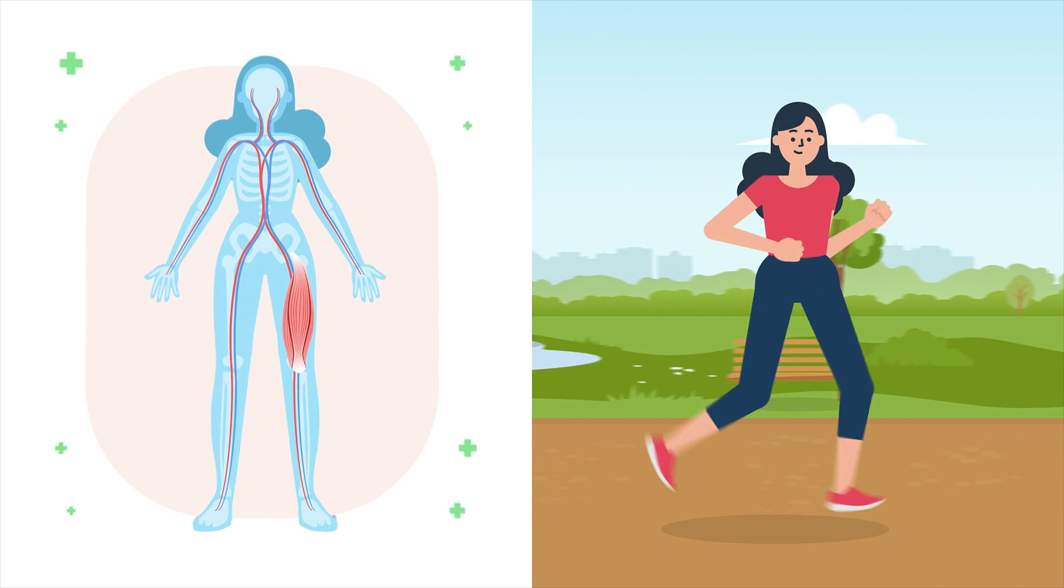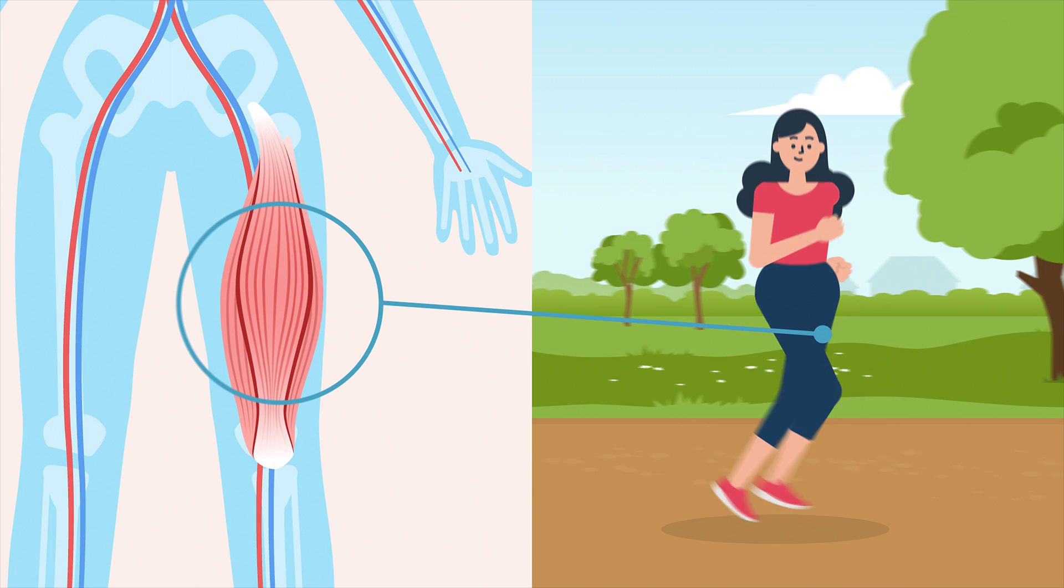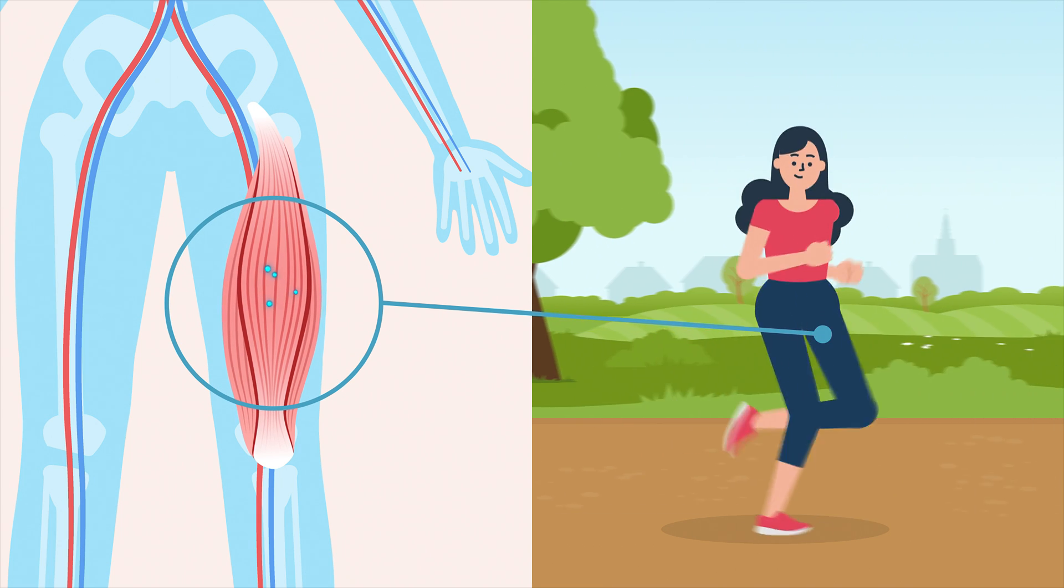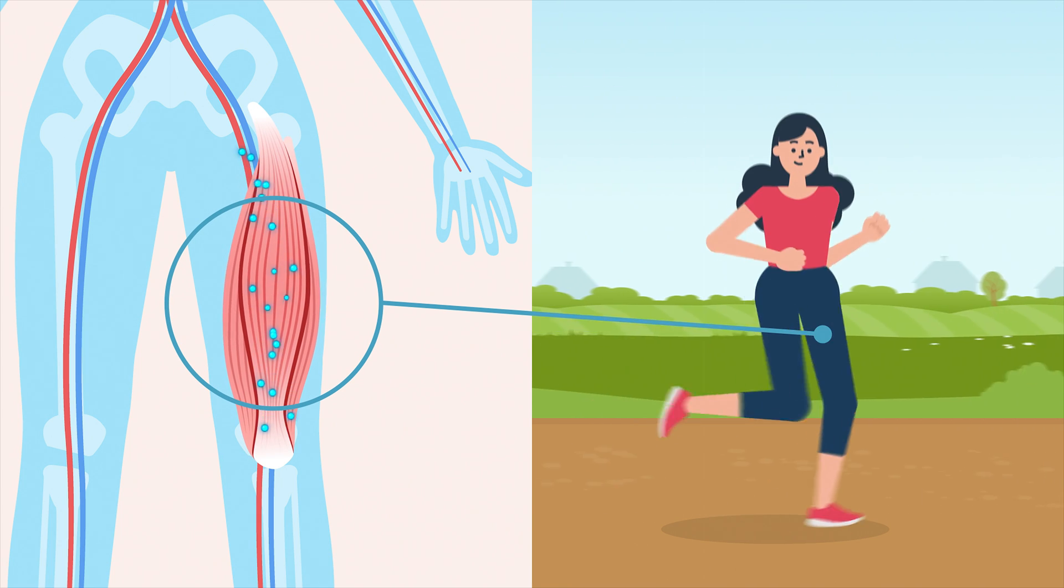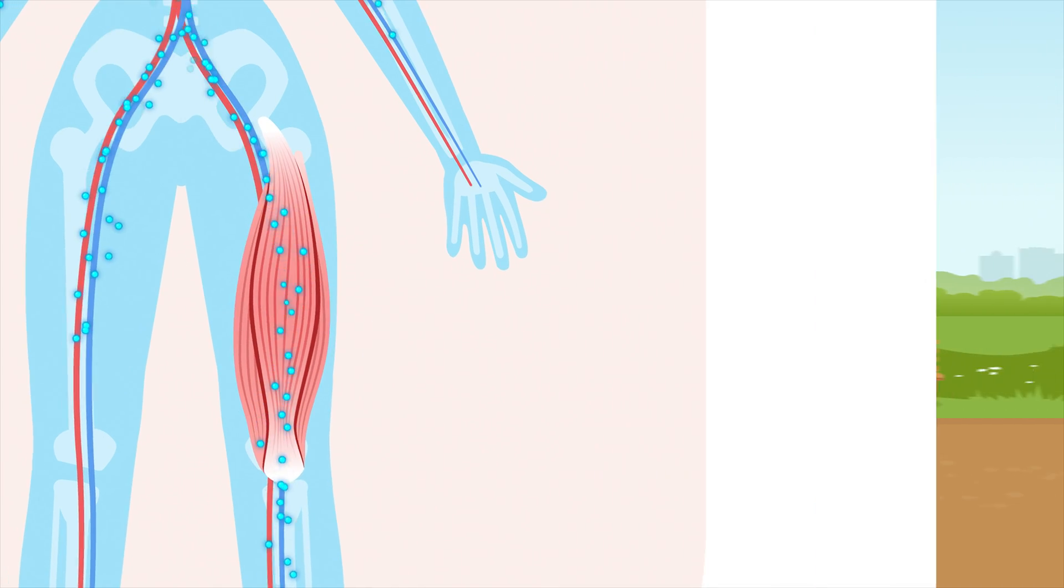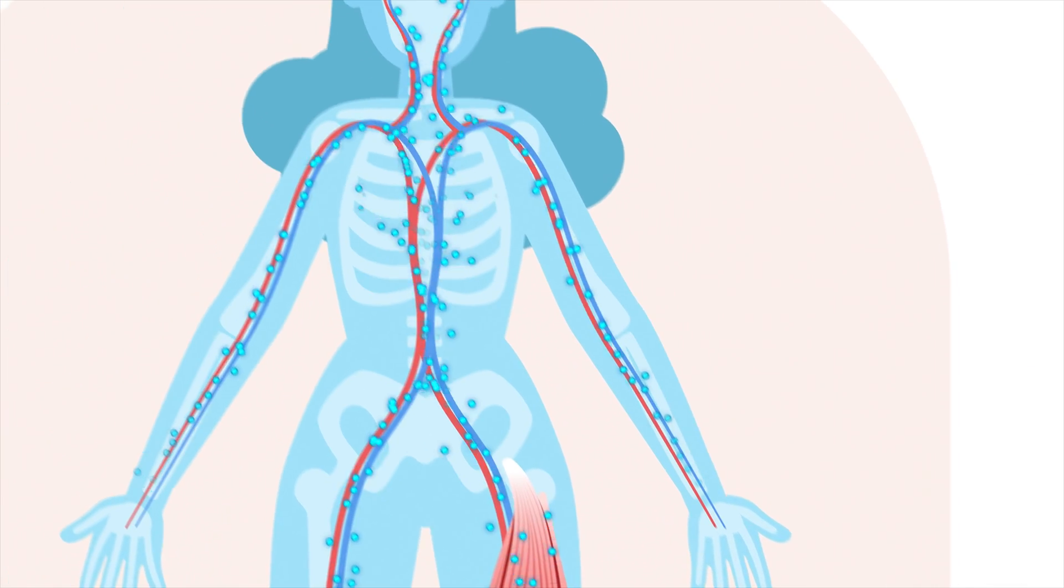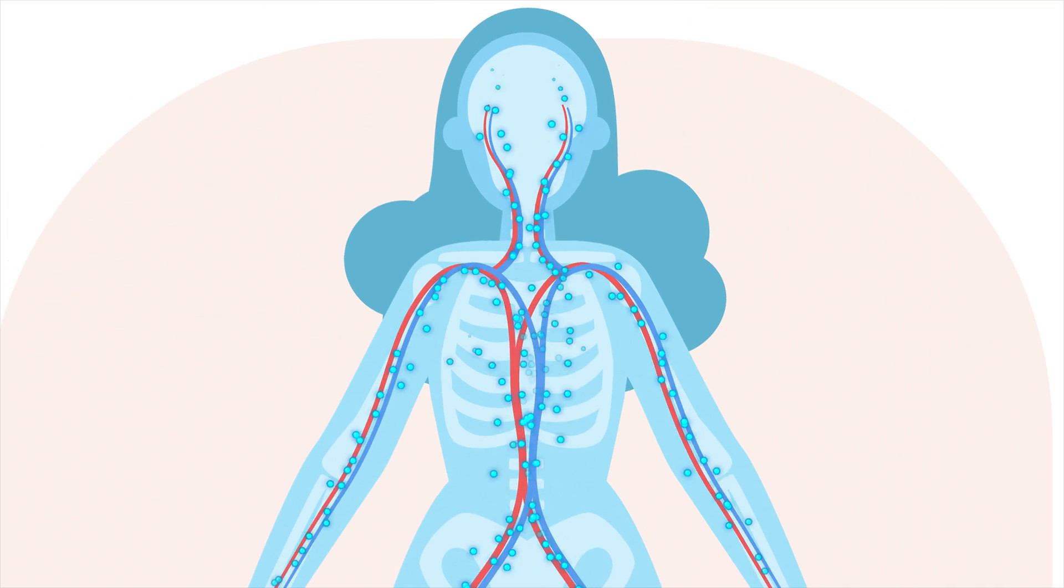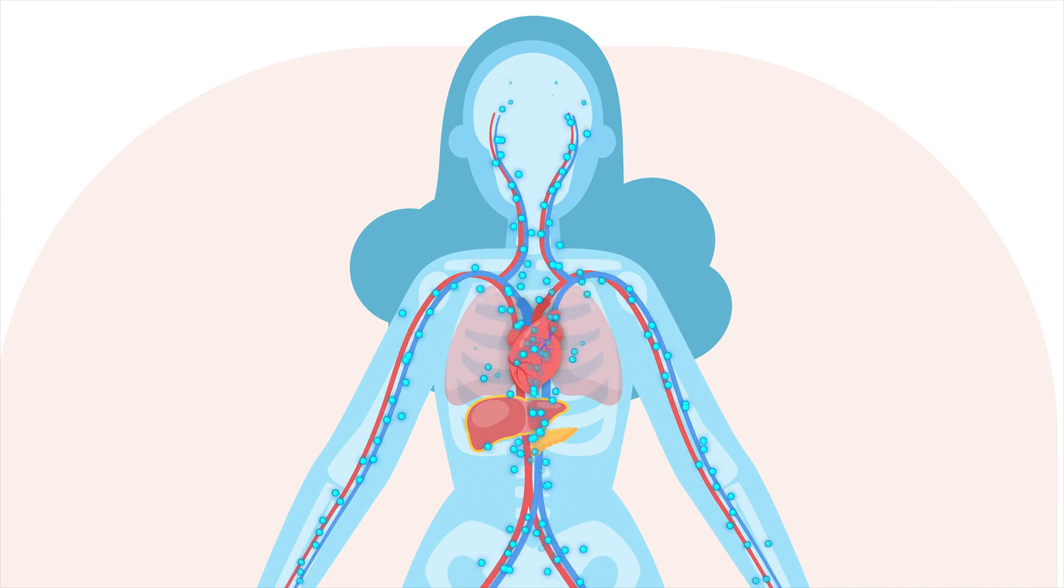Every time you move, your muscles are doing something amazing. They're releasing special molecules called myokines. Think of myokines as tiny chemical messengers. They don't just stay in your muscles. They travel through your bloodstream to communicate with a wide range of organs and tissues.